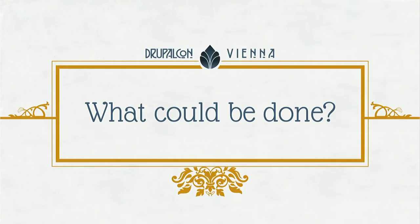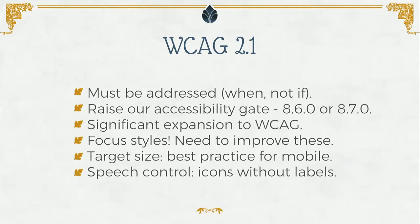Today we're going to look at a few things we could do in the future and sketch out a little roadmap for where we go next. This one isn't something we could do — this is something we must do. The Web Content Accessibility Guidelines are getting an update. WCAG 2.1 is a significant expansion that brings in about 20 new success criteria.